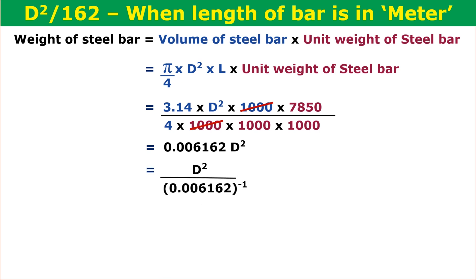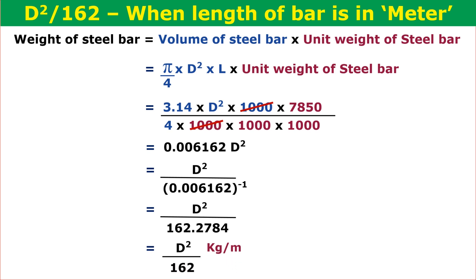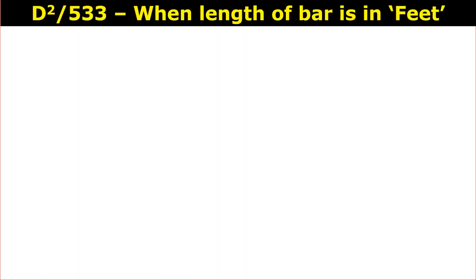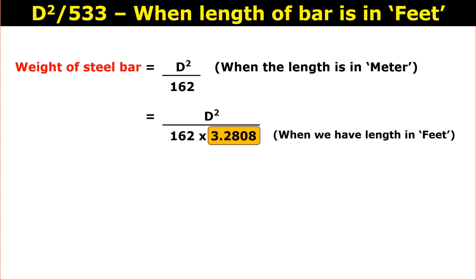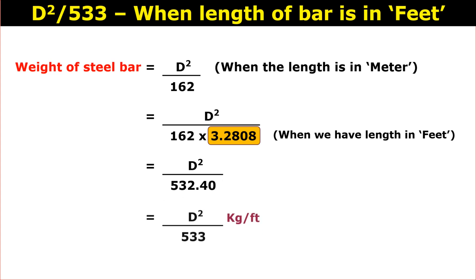Bringing 0.006162 to the denominator, we get d² by 162.2784 kg per meter, which is approximately equal to d² by 162 kg per meter. Now for the length in feet: since 1 meter equals 3.2808 feet, replacing meter with feet in the equation gives d² divided by (162 × 3.2808), which becomes d² by 532.40. This value is approximately equal to d² by 533.